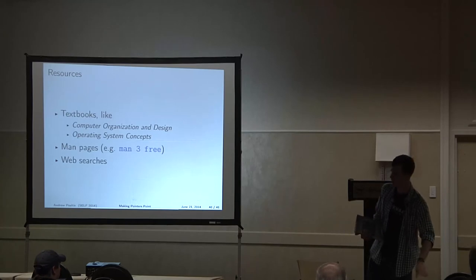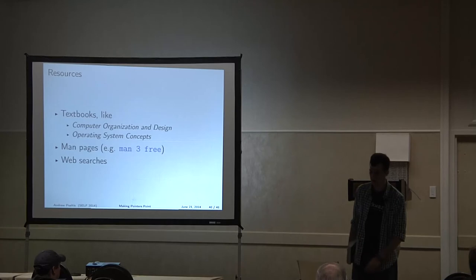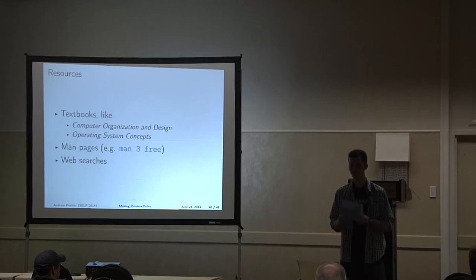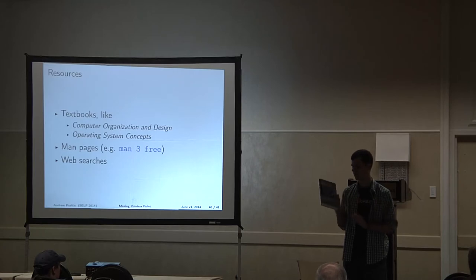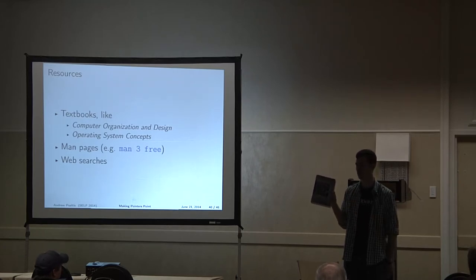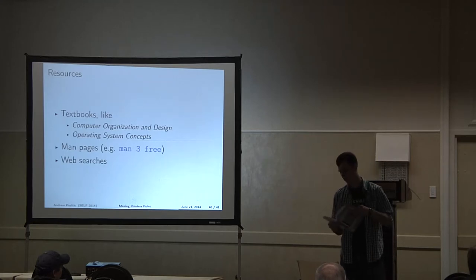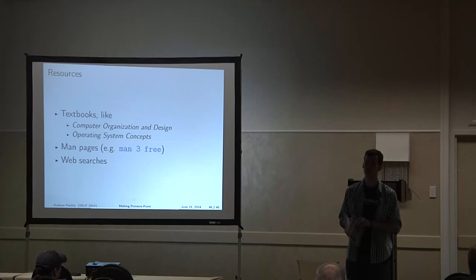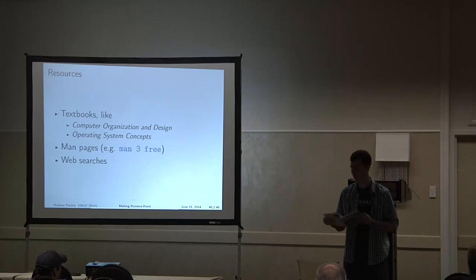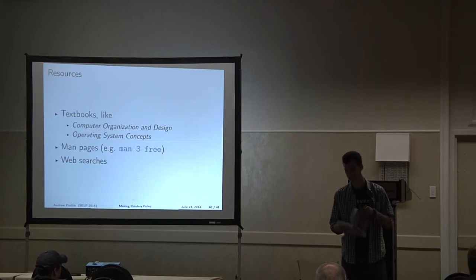For operating systems, the common book is called the Dinosaur Book — it has dinosaurs on it, and every single edition has dinosaurs on the cover for no reason. It contains information on how operating systems do their thing: virtual memory, the memory hierarchy, file I/O, thread locking, context switching, that sort of thing.